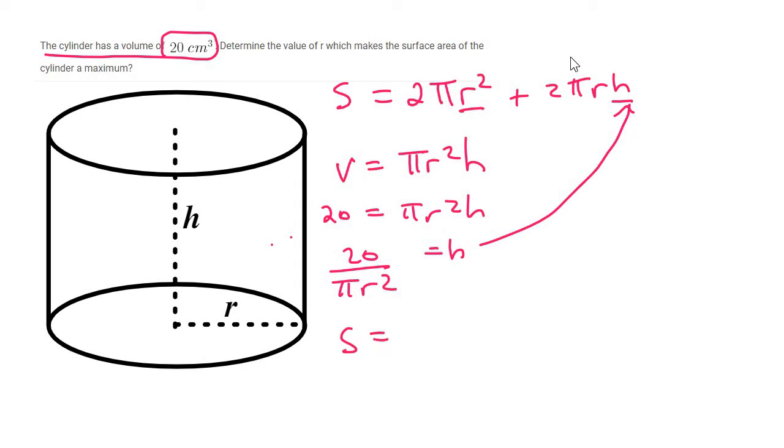And so the surface area would then become 2 pi R squared plus 2 pi R. And then in brackets, we can replace H with 20 over pi R squared. And so the surface area is going to be 2 pi R squared plus.